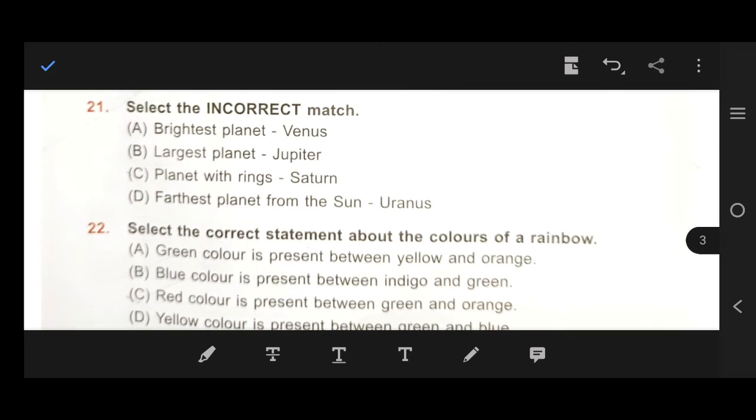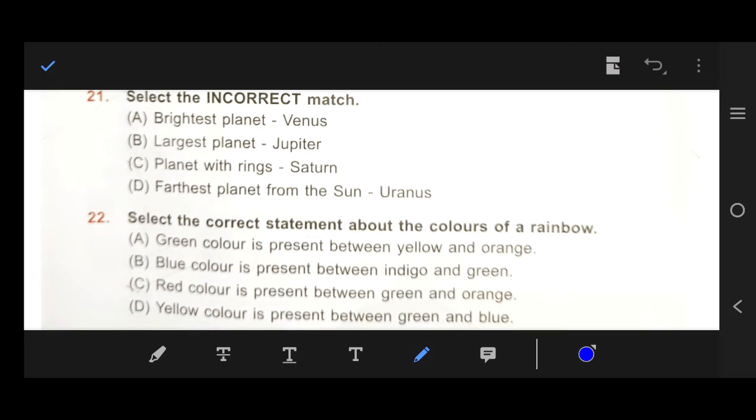Next, number 21, select the incorrect match. Brightest planet Venus, it's correct. Largest planet Jupiter, it's the right answer. Next, number C, planet with rings Saturn. It's the wrong answer. So, here is C, correct answer, incorrect. C, planet with rings Saturn.